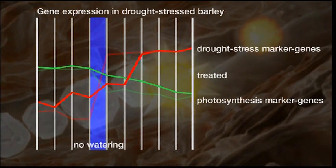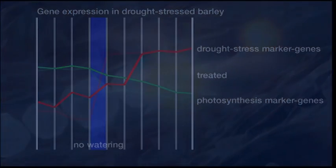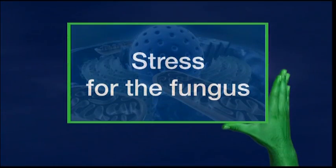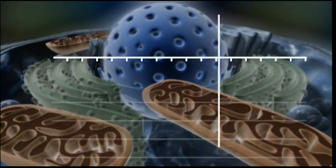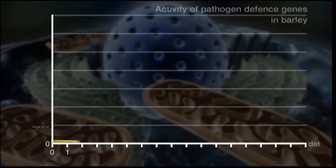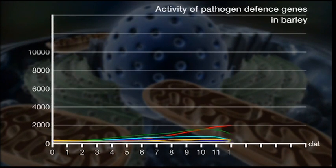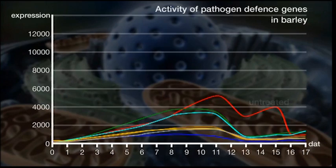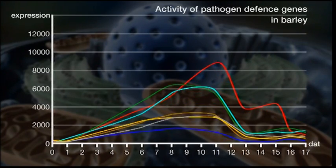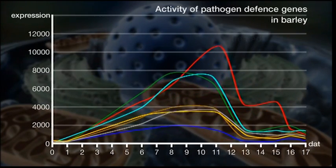The consequence? Extended energy production. In addition, Gaucho activates the plant's own defence mechanism against fungal, bacterial, and viral diseases, as demonstrated in this barley experiment.